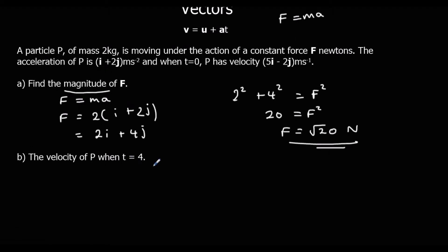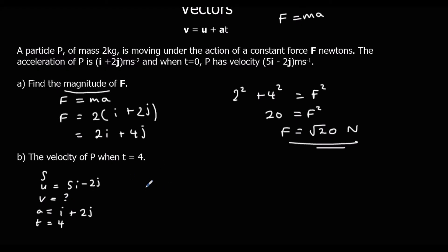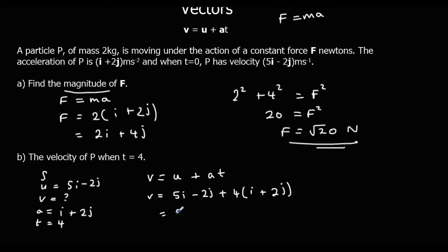Find the velocity when t equals 4. So we're using v equals u plus at. We know t is 4, we know a is i plus 2j, and the initial velocity is 5i minus 2j, and we want to find v. So v equals u plus at: v equals 5i minus 2j, plus 4 times a, which is i plus 2j. So we simplify: 5i minus 2j plus 4i plus 8j, which is 9i plus 6j.